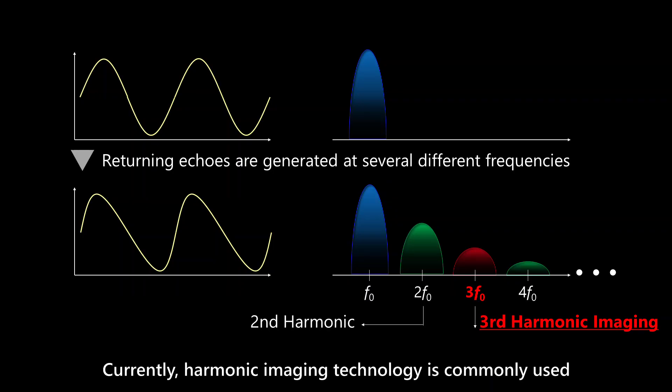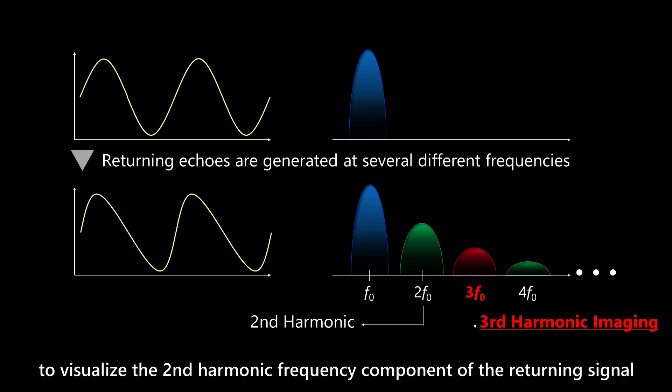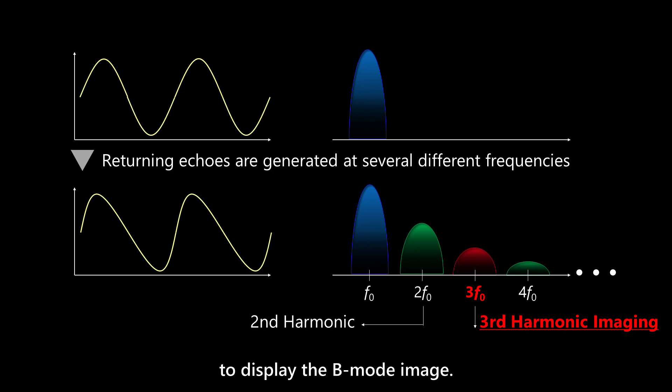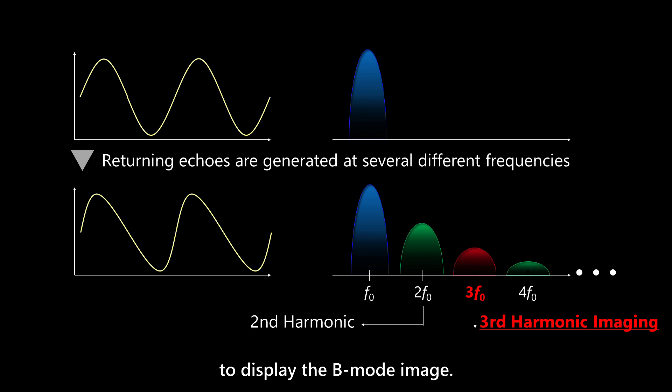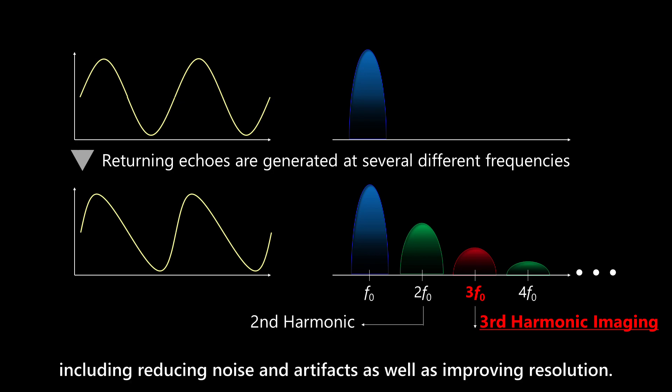Currently, harmonic imaging technology is commonly used to visualize the second harmonic frequency component of the returning signal to display the B-mode image. There are many benefits to using the second harmonic, including reducing noise and artifacts, as well as improving resolution.